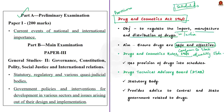The Drugs and Cosmetics Rules 1945 also contain various guidelines for storage, sale, display and prescription of drugs of various schedules. For example, paracetamol is sold over the counter whereas benzodiazepine is not sold over the counter. This classification is made by the Drugs and Cosmetics Rules 1945.